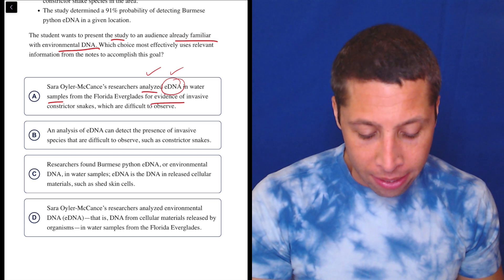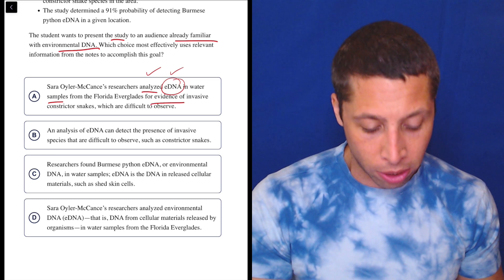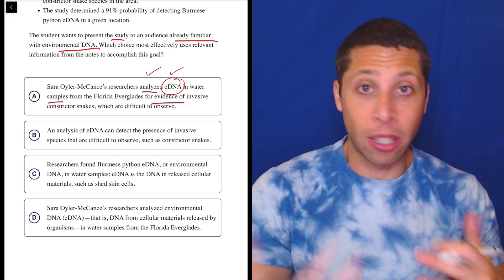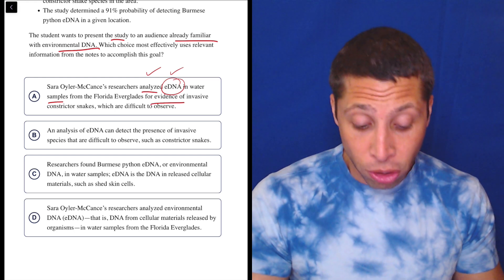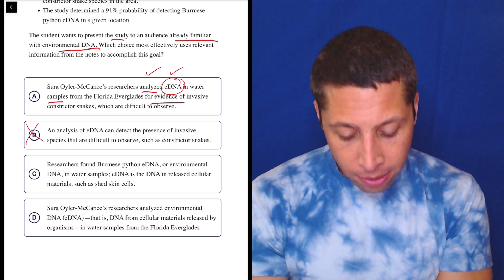Choice B: An analysis of eDNA can detect the presence of invasive species that are difficult to observe, such as constrictor snakes. But that does not talk about the study, right? It maybe is kind of what the study was based on, but notice it doesn't even mention the study at all. It doesn't mention this person. We want to talk about the study.